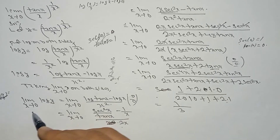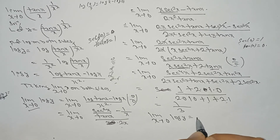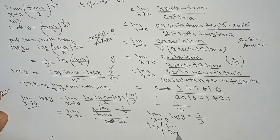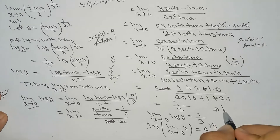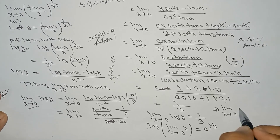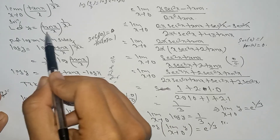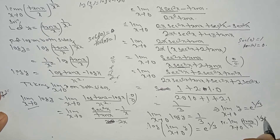So limit x tends to 0 of log y = 1/3, which means log(limit x→0 of y) = 1/3. Therefore limit x tends to 0 of y = e^(1/3). Since y = (tan x / x)^(1/x²), the answer is: limit x tends to 0 of (tan x / x)^(1/x²) = e^(1/3). This is the required answer.